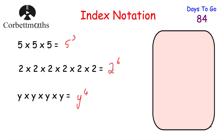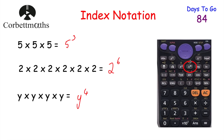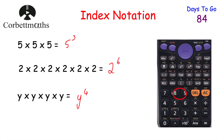You will have seen this whenever we looked at product of primes previously. Now I want to make sure you know where the power button is on your calculator. If you've got a calculator like this one, you'll see the power button here — press your number, then the power button, then type the exponent, for example 2 then power then 6. You can also type negative powers or fractional powers using this button.